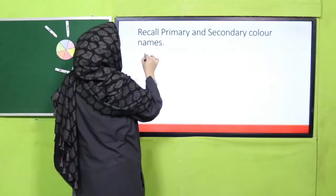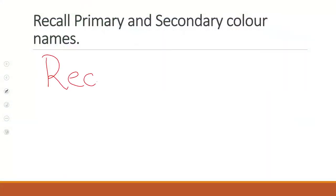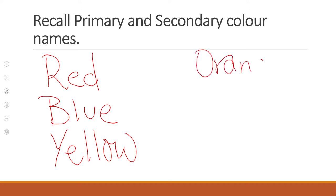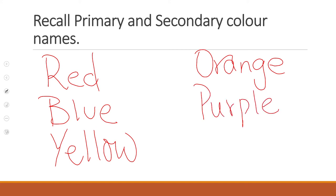How do we spell Red? R-E-D. Blue? B-L-U-E. And then Yellow? Y-E-L-L-O-W. Shabash! Jinko spelling zyaada achi se yaad hai - very well. And then let's go to Secondary Colors. Hum ne kya kya tha? Orange. Purple. And one more color - Green. Shabash! So I hope teachers you are revising these color names with them - wonderful and excellent on your part.